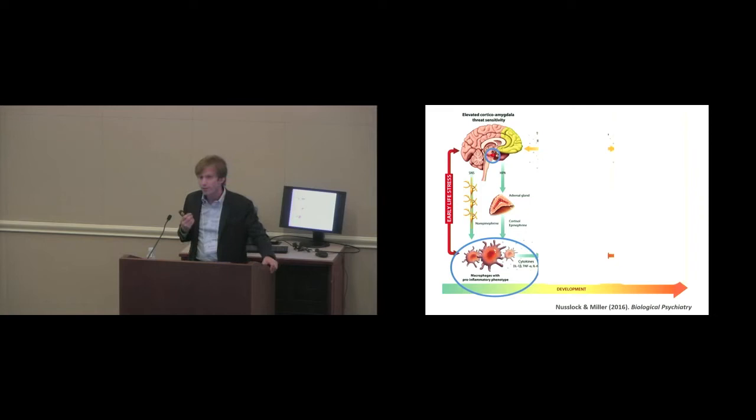Now, the mechanisms by which early adversity mediates increased inflammation operates through, in part, the amygdala. Because under conditions of stress, the amygdala will activate sympathetic nervous system fibers and HPA axis mechanisms via the hypothalamus and initiate the release of hormonal products onto developing white blood cells in the periphery of the body. And that generates a pro-inflammatory phenotype in the body.